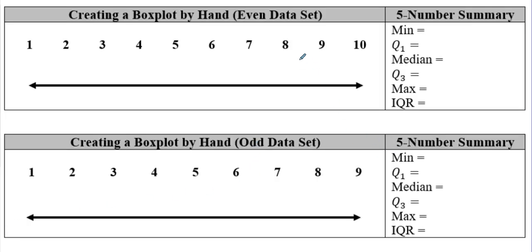Our first thing to do is figure out how to create a box plot, and it is a little bit different when we have an even data set versus an odd data set. Starting with the even data set, remember our first step is that we need to be in order from least to greatest. Then we can start plugging away at our five number summary — the pieces are: the minimum, the first quartile, the median, the third quartile, the max, and then we can calculate the IQR.